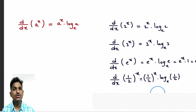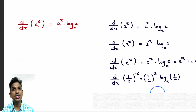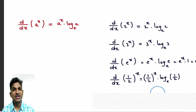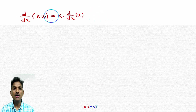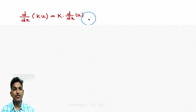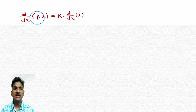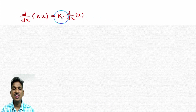These rules we use very frequently — almost every problem in differentiation uses these basic rules. Let's see what the basic rules of differentiation are. d/dx of ku equals k into d/dx of u. This is one of the 23 formulas. Here k is a constant and u is any function. Derivative of ku is k into derivative of u.